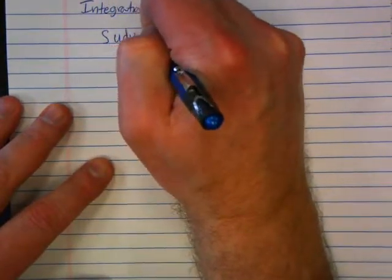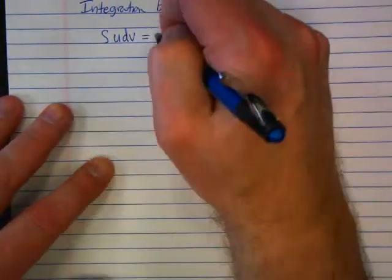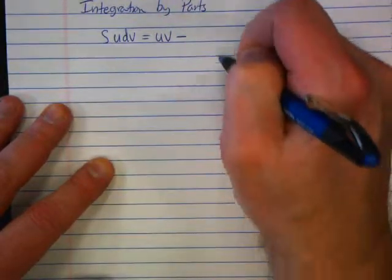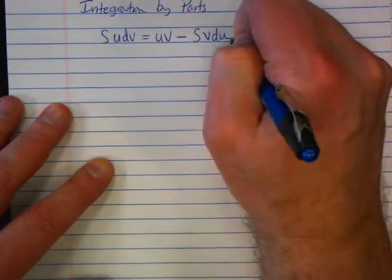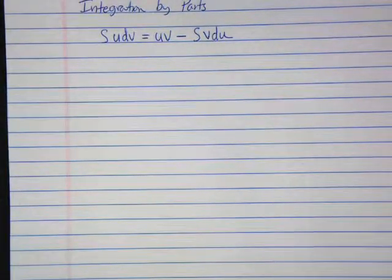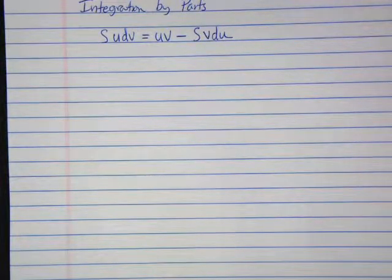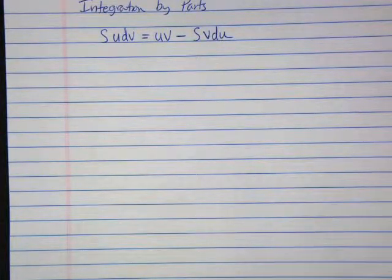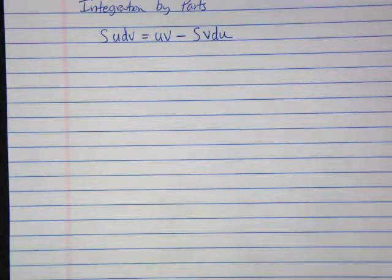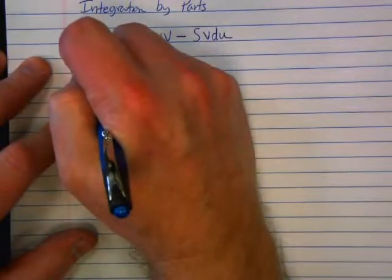The integral of u dv is uv minus the integral of v du. What I wanted to look at today is integration by parts done over and over again. We did an example yesterday where we had to do it twice.